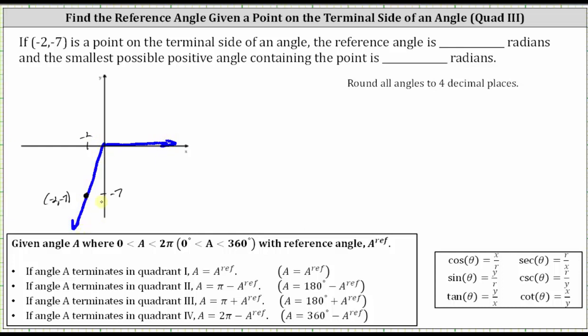And again, because we're looking for the smallest possible positive angle, the angle would need to be this angle here. We also know on the coordinate plane, tangent theta is equal to y divided by x.